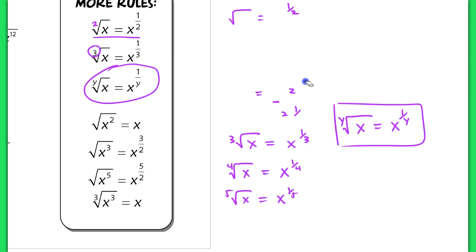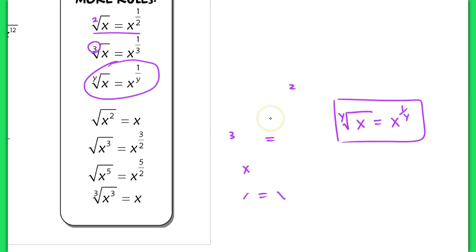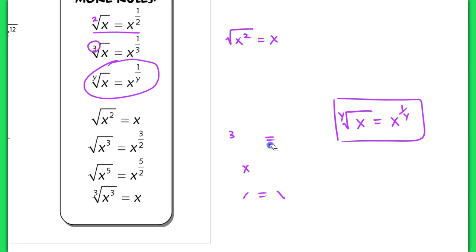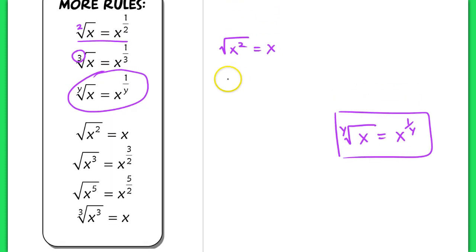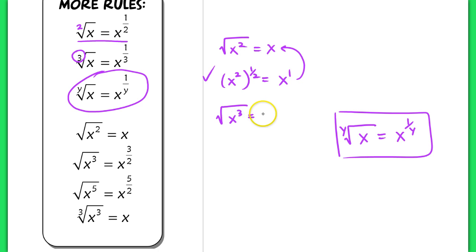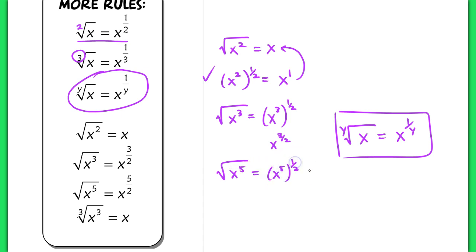Looking at more examples: the square root of x squared equals x, because x squared to the 1 half gives x to the 1st. The square root of x cubed is x cubed to the 1 half, which equals x to the 3 halves. The square root of x to the 5th is x to the 5th to the 1 half, giving x to the 5 halves. The cube root of x cubed is x cubed to the 1 third, which equals x to the 1st, or just x.